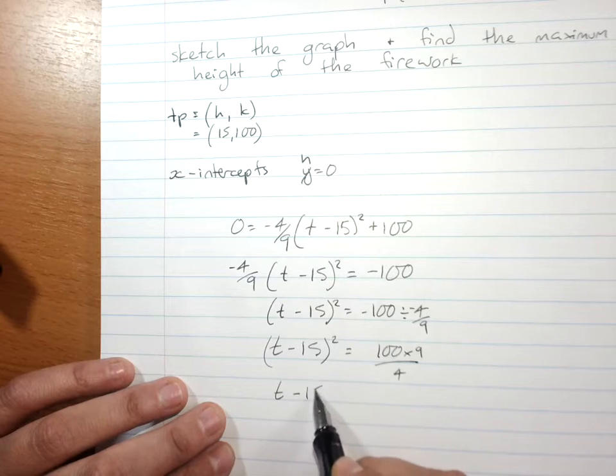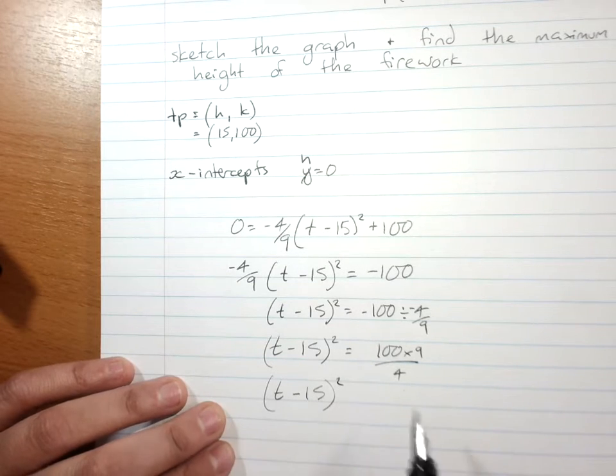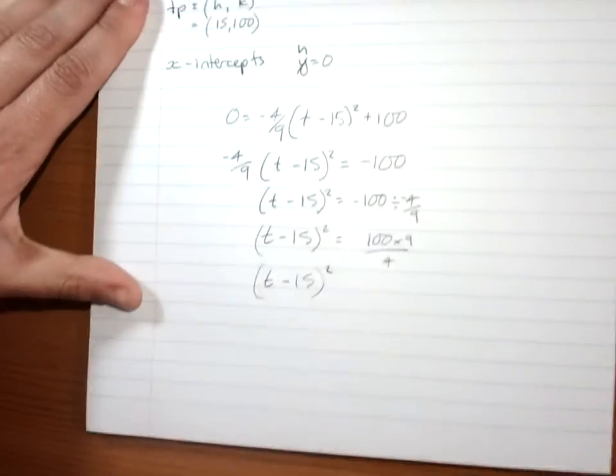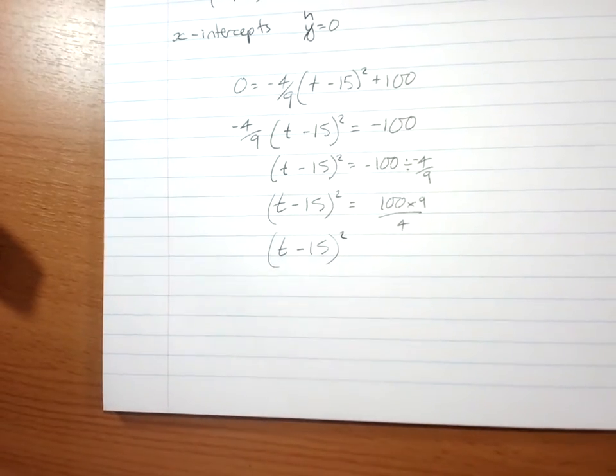So t minus 15 squared, zoom up a little bit there, make sure we're focused.